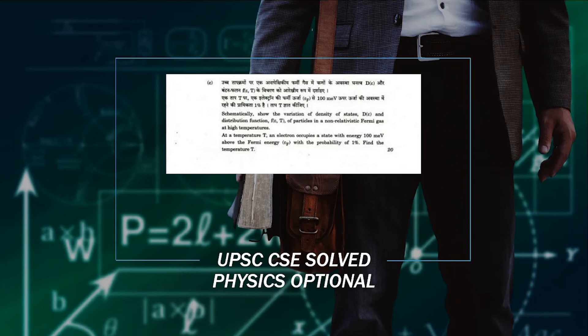We have to plot this for the high temperature non-relativistic case. And there's a second part: at a temperature T, an electron occupies a state with an energy 100 millielectron volt above the Fermi energy with a probability of 1% — find the temperature T. So first we have to plot the curves for density of states and distribution function for high temperature, and secondly find the temperature where an electron occupies a certain energy level above the Fermi energy with a probability of one percent.